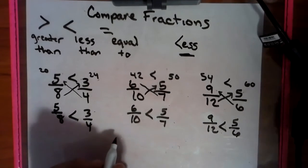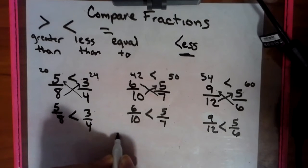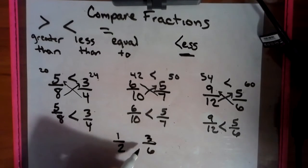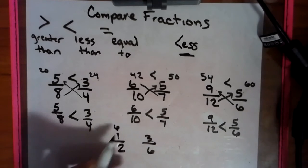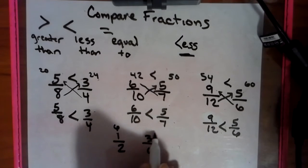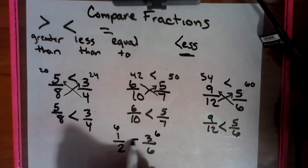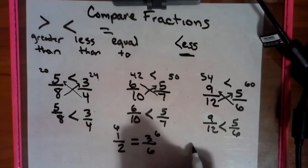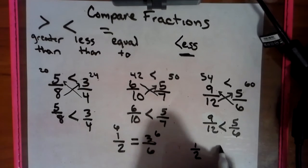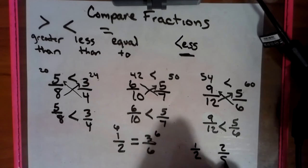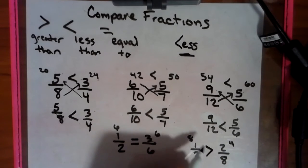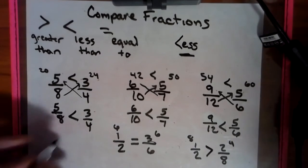We can even do something like this — let's say 3/6. Multiply diagonally, diagonally — they're equal! And then we can do something like cross multiply — 8's bigger. You don't have to show the diagonals in the middle; it's just an easy way to do it.